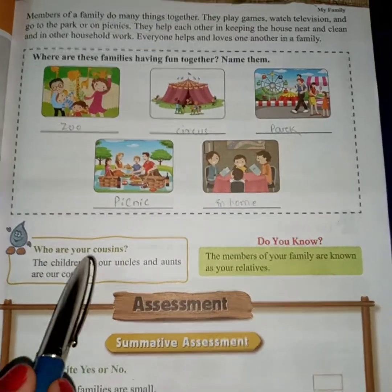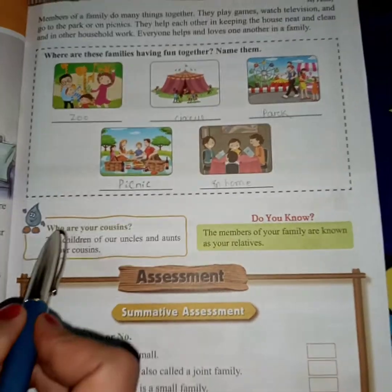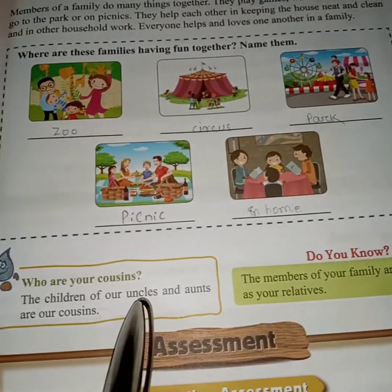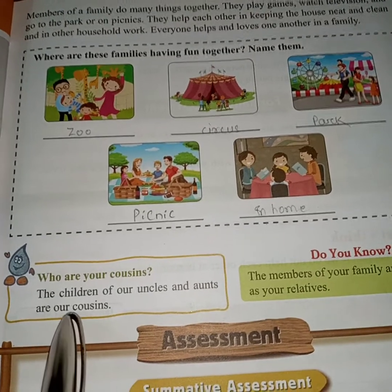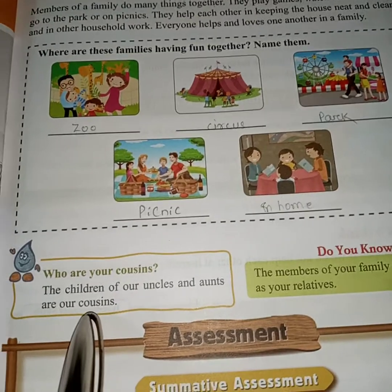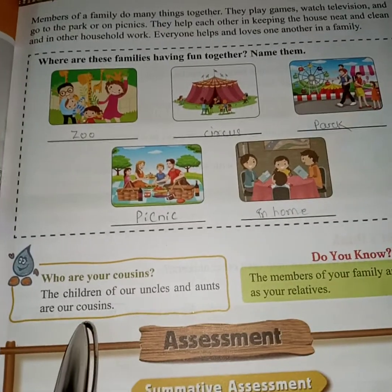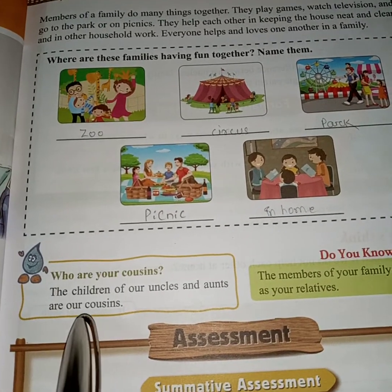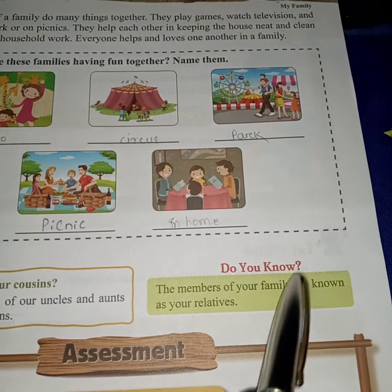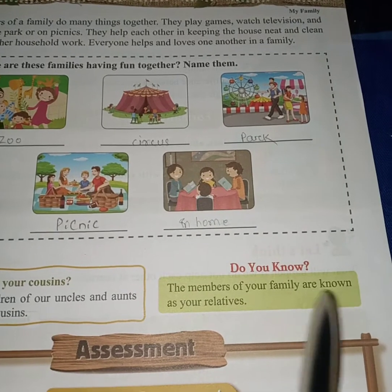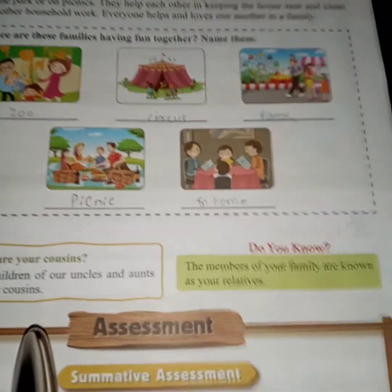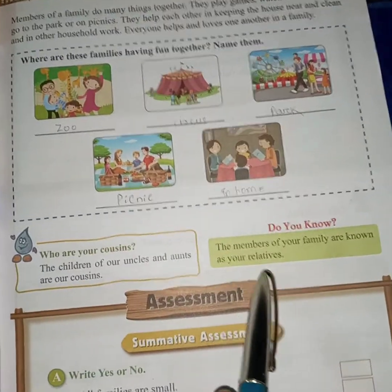देखो बच्चो, नीचे दो questions दिए गए हैं, मैं पढ़कर तुम लोगों को answer समझा देती हूँ। The children of our uncles and aunts are our cousins. Cousin किसे कहते हैं — देखो, हमारे चाचा, चाची या मामा, मामी के जो बच्चे होते हैं, उसको cousin कहते हैं। Do you know the members of your family are known as your relatives? हमारे परिवार के हर एक सदस्य हमारे रिश्तेदार होते हैं।